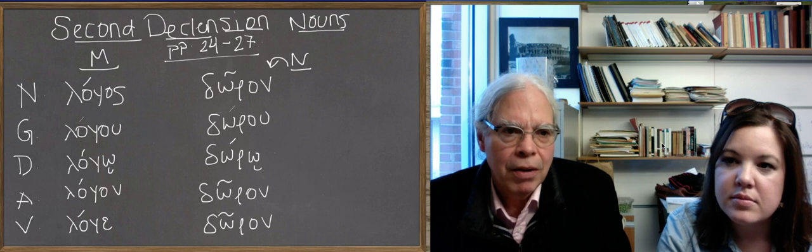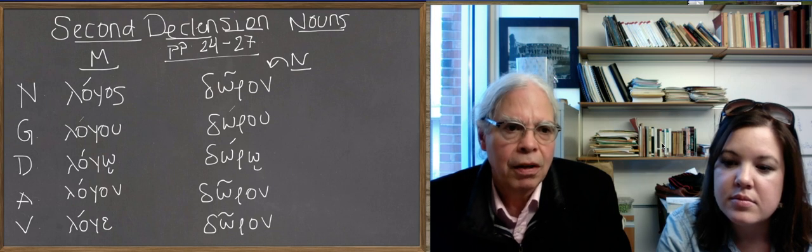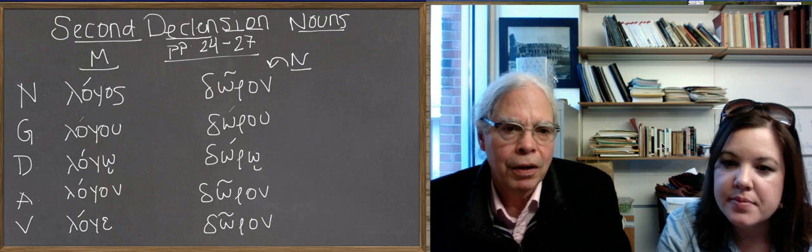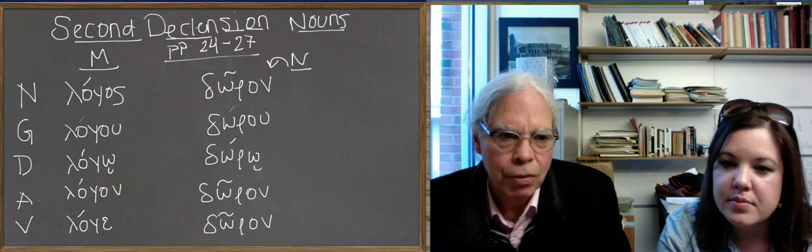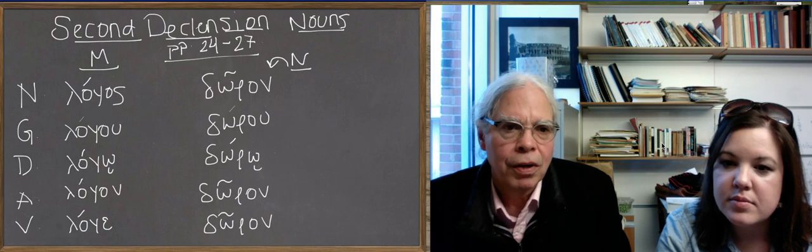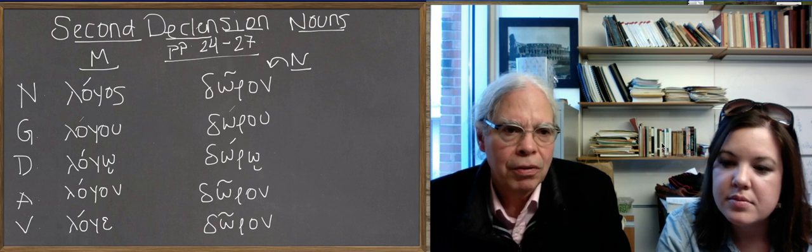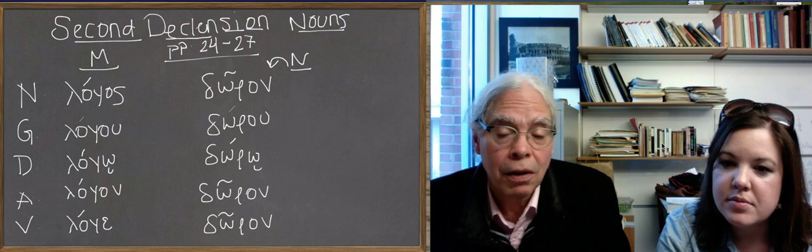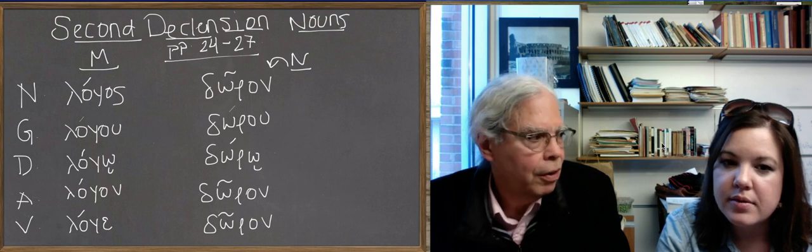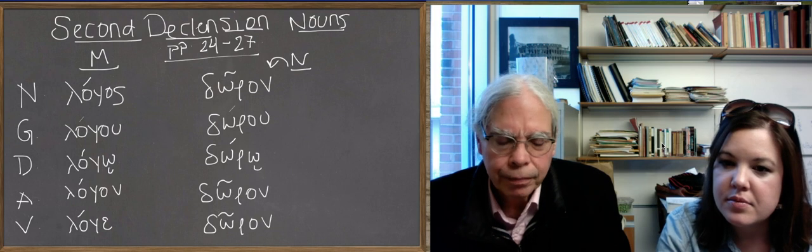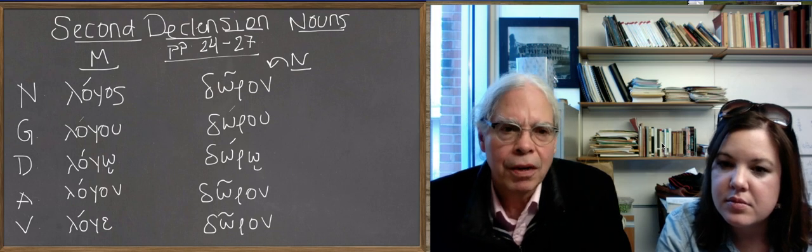We're going to see some funny things about masculine and feminine in Greek. Most of them are either masculine, like logos with genitive lagu, or neuter like doron, whose genitive is the same doru as lagu. Notice that the neuter noun has an N ending in the nominative and accusative, whereas the masculine has an S ending in the nominative and the N ending only in the accusative.